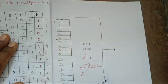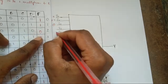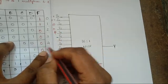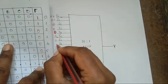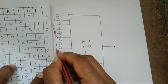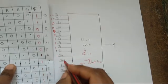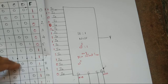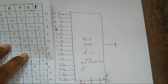Continuing, I2 = 0, I3 = 0, I4 = 0, I5 = 0, I6 = 1, I7 = 1, I8 = 1, I9 = 1, I10 = 1, I11 = 1, I12 = 1, I13 = 0, I14 = 1, I15 = 0. This completes the implementation of the given expression using the 16-to-1 multiplexer.